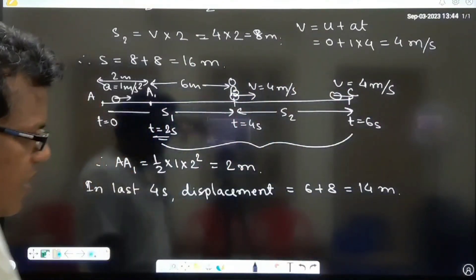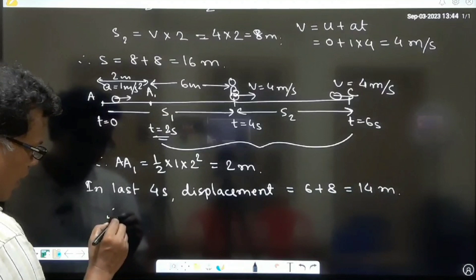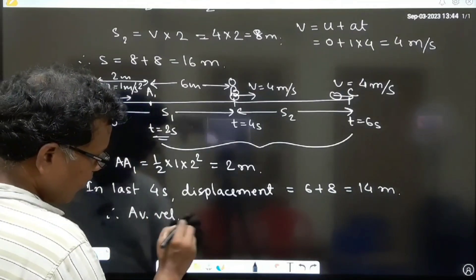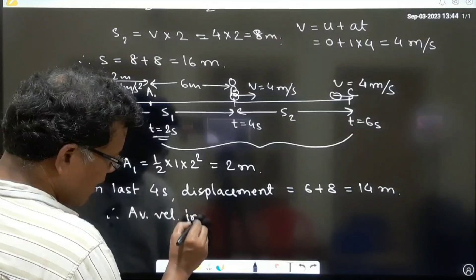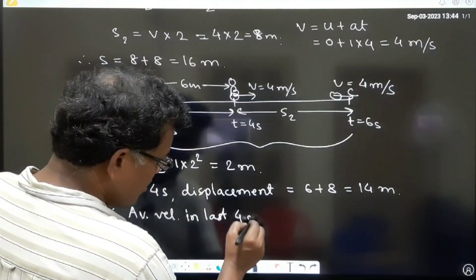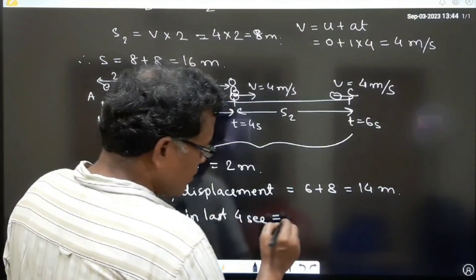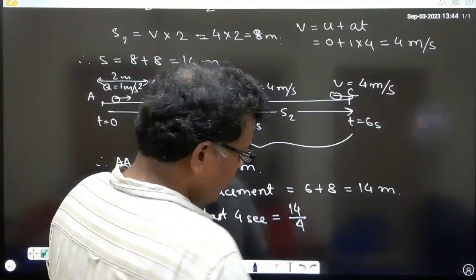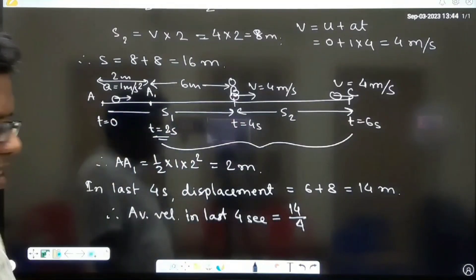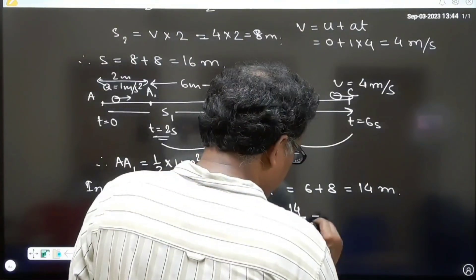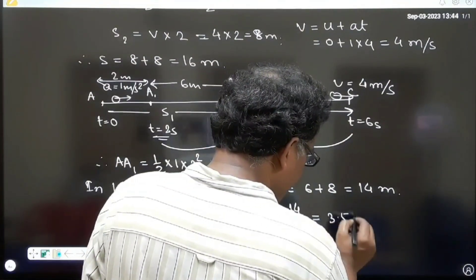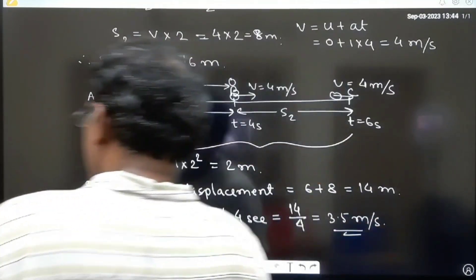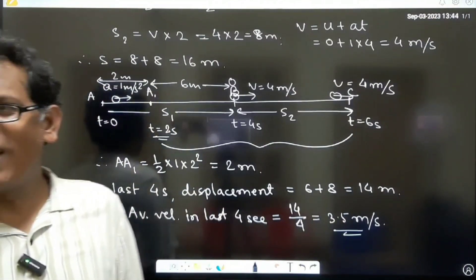So therefore average velocity in last 4 second - that will be displacement in last 4 second divided by the time 4 second, 3.5 meter per second on the average velocity during the last 4 second of the journey.